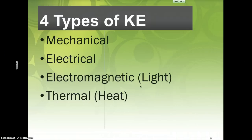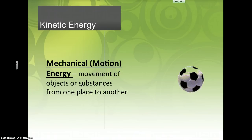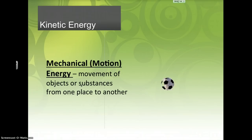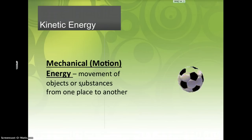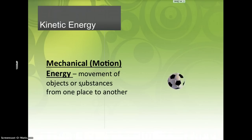Those are the two main types of potential, so you only had to learn one more. Now for kinetic, we have a couple more. You already know mechanical, also called motion energy, and I'm going to introduce three more types. Mechanical is the movement of objects or substances from one place to another — essentially what we've been doing for the last week. When you were running outside, that's kinetic or mechanical energy. When you drop a book and it starts moving, that's mechanical. The skateboarder at the bottom of the ramp, the pendulum at the bottom — these are all kinetic motion energy.